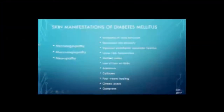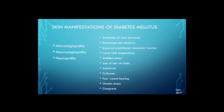There can also be consequences of the microangiopathy, macroangiopathy, and neuropathy. From these, you can get ischemia of the vasa nervorum, decreased skin elasticity, impaired endothelial vasomotor function, lower limb temperature, mottled coloring, loss of hair on the limbs, anhidrosis, calluses, poor wound healing, chronic ulcers, and eventually gangrene.